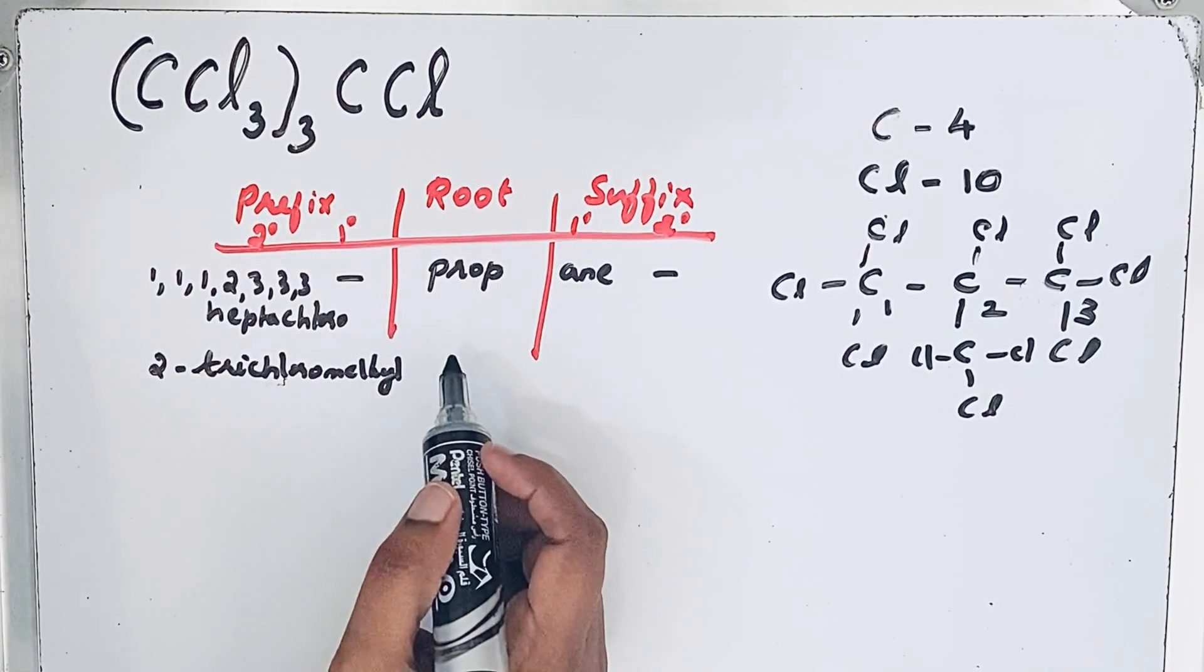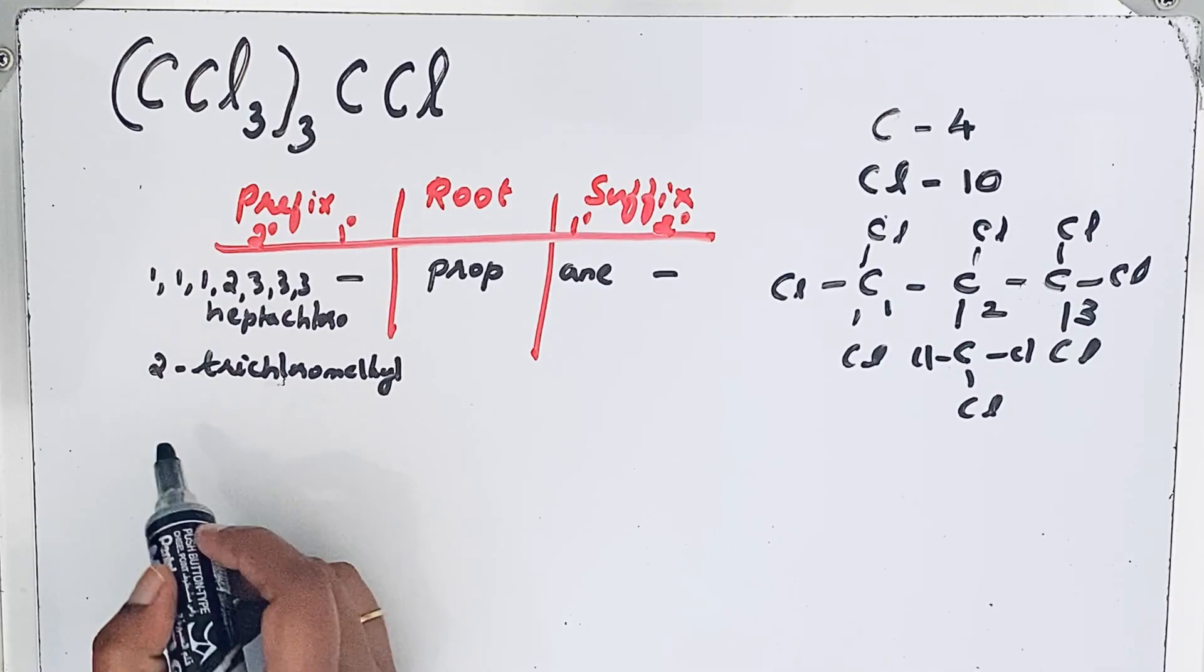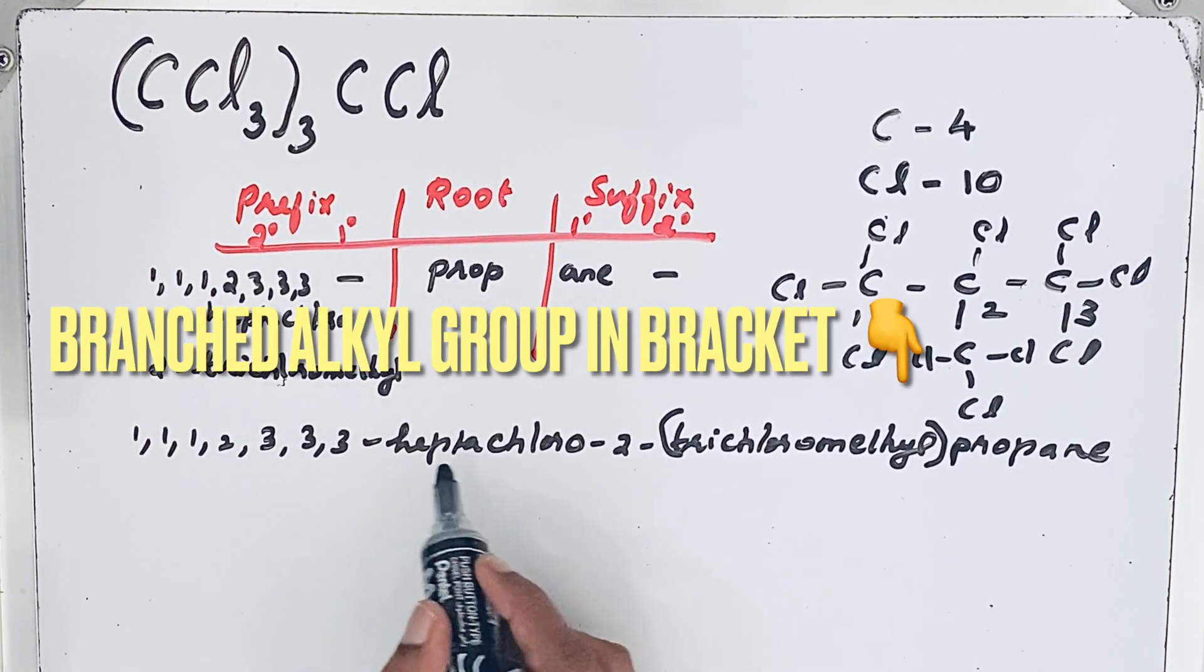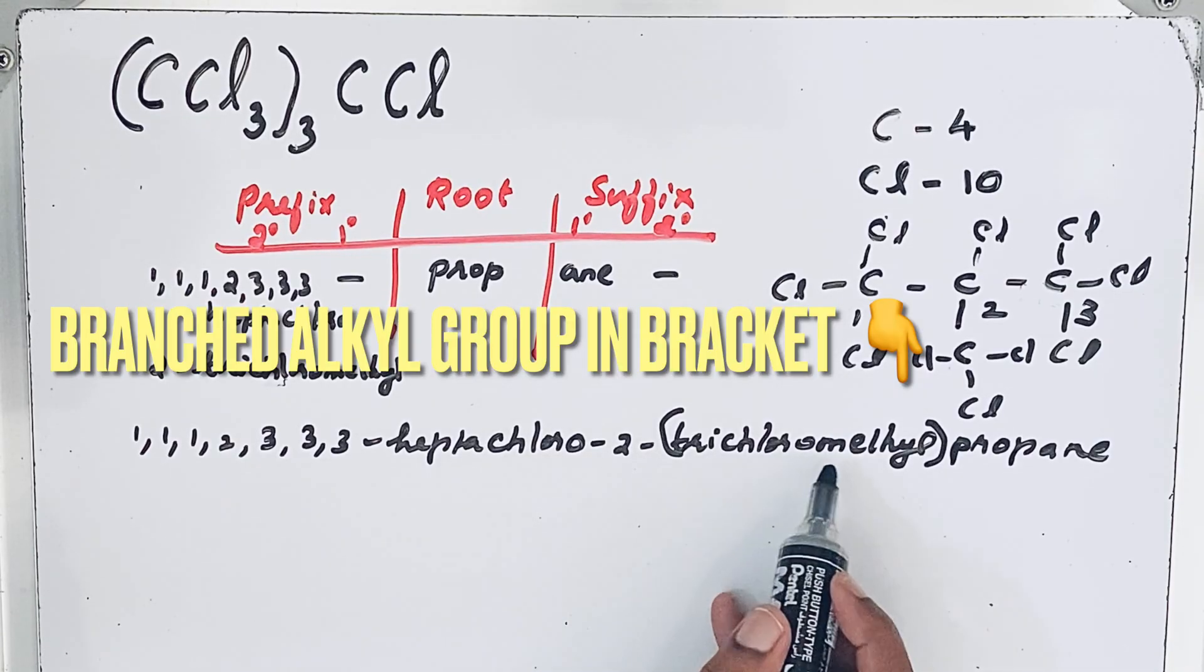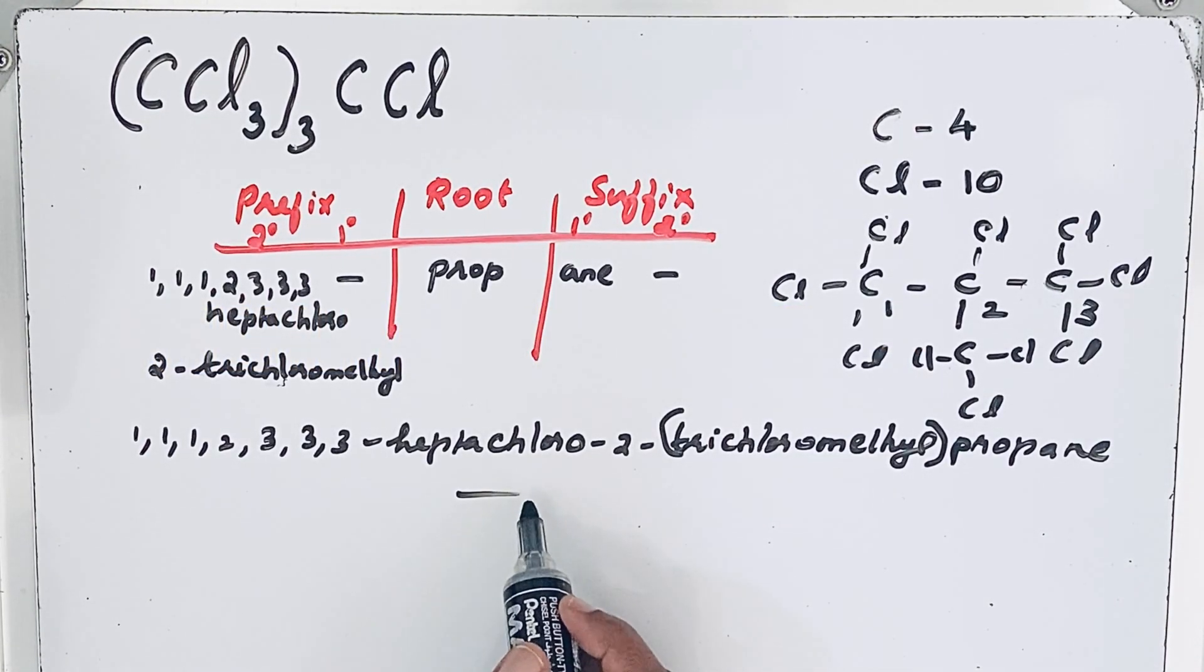So now we can write that IUPAC name: 1,1,1,2,3,3,3-heptachloro-2-trichloromethylpropane is the IUPAC name. Thank you very much for watching.